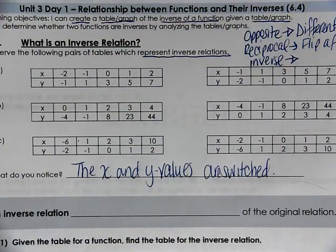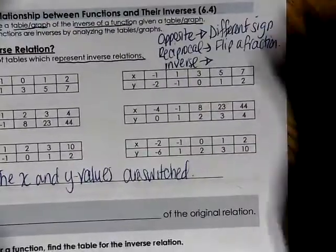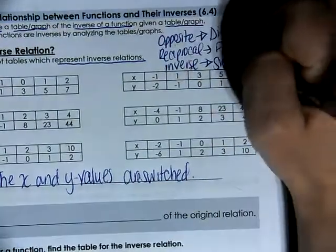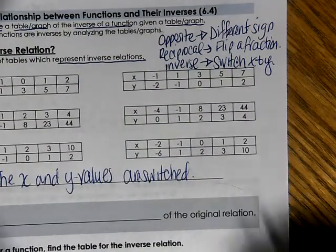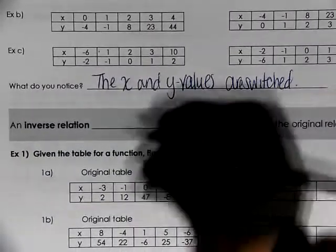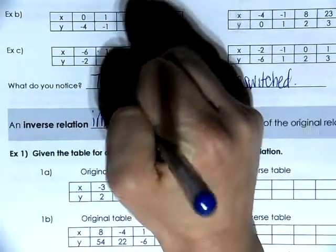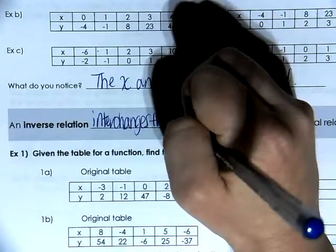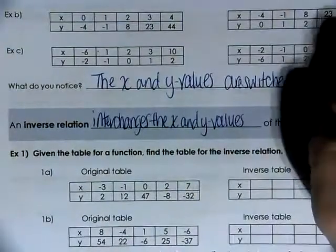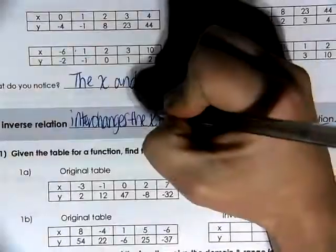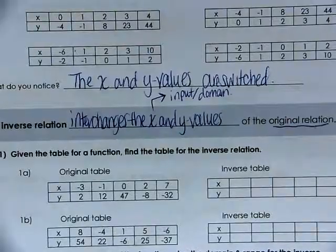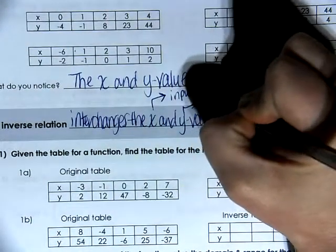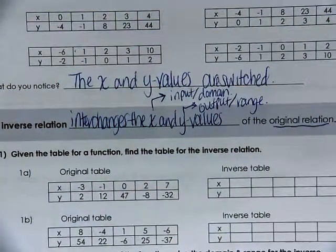We don't say they're opposites because they're not different signs, and we don't say they're reciprocals because we're not flipping fractions. Instead, with an inverse, we switch the x and y — they flip-flop. So an inverse relation interchanges the x and y values of the original relation. Remember that x values are the input or domain values, and y values are the output or range values. Those will come into play a little bit later.